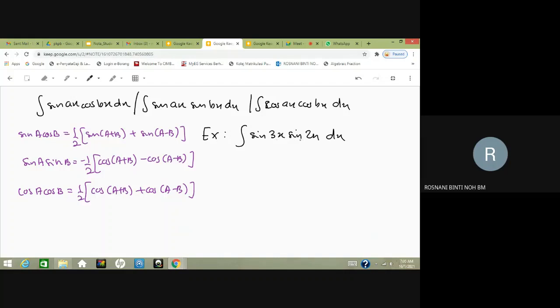The formulas are sin A cos B, sin A sin B, and cos A cos B. These are the formulas we will use. We have to change this trigonometric expression to be in this form.